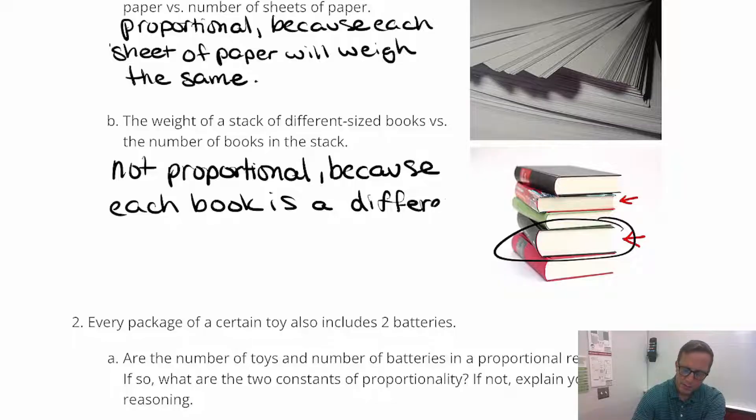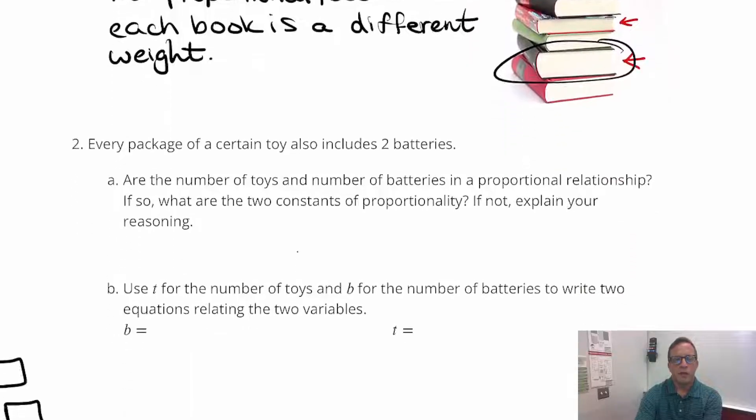So each book is a different weight. Now if we're talking about the same book, if we're talking about a stack of books that are all the same author, same novel, same publisher, everything, same hardcover type, then it's proportional. But these are different books. These are not the same. So there's not a constant of proportionality.